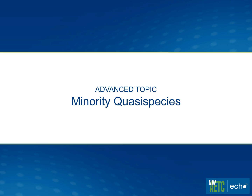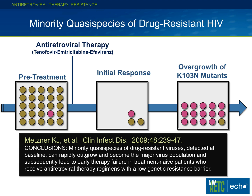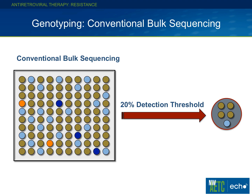One advanced topic is the issue of minority quasi-species. An individual could have a very small population of resistant virus in their body that isn't an issue until you start treatment. For example, if you treat with tenofovir/emtricitabine/efavirenz and the patient initially responds well, but you don't knock off that resistant strain, over time that resistant strain wins out, becomes dominant, and your medications no longer work. The conventional genotype measures virus present in at least 20% of the quasi-species, so very small minority populations will not be picked up on conventional bulk sequencing.